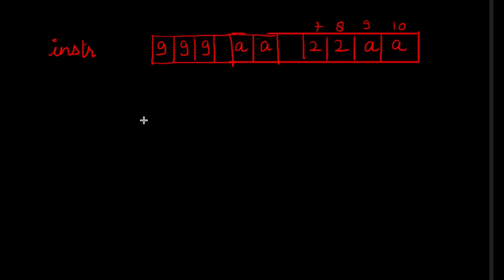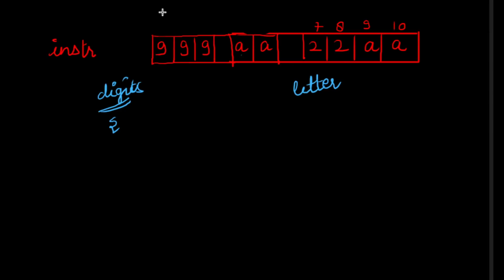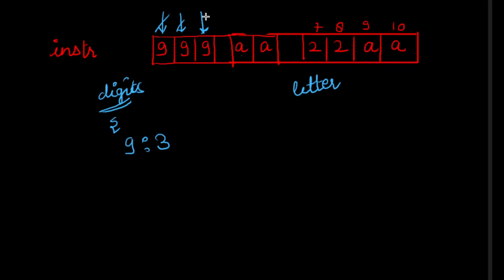To calculate the frequency of digits and letters, we need two dictionaries or hash maps. One dictionary maintains the frequency of digits and another maintains the frequency of letters. Let's traverse the string: the first character is 9, so if 9 is not in the dictionary we insert it with value 1. When we encounter 9 again, it's already present so we update its count to 2, then 3.